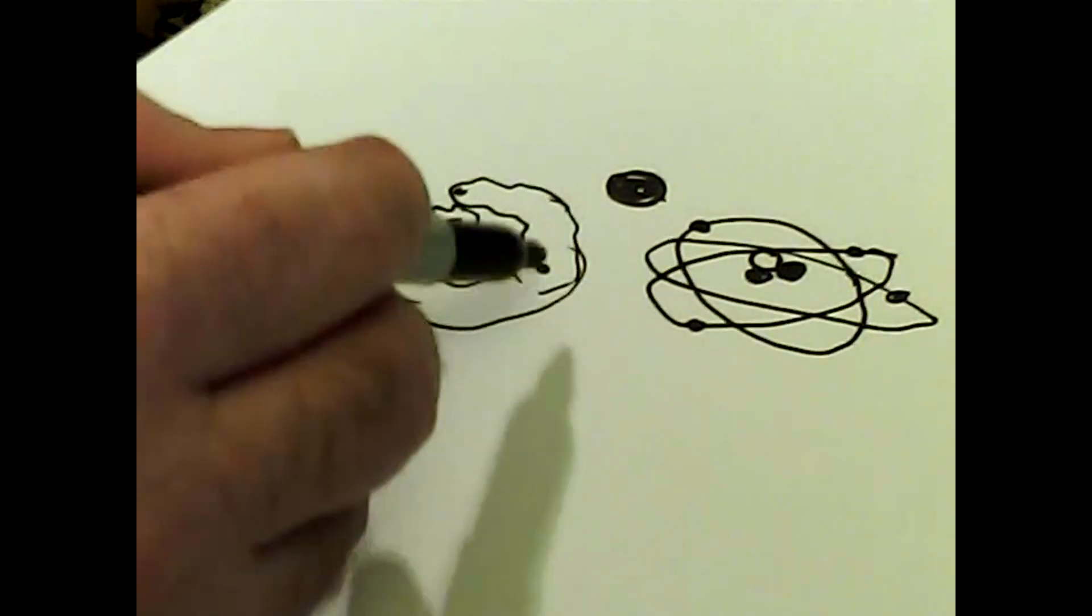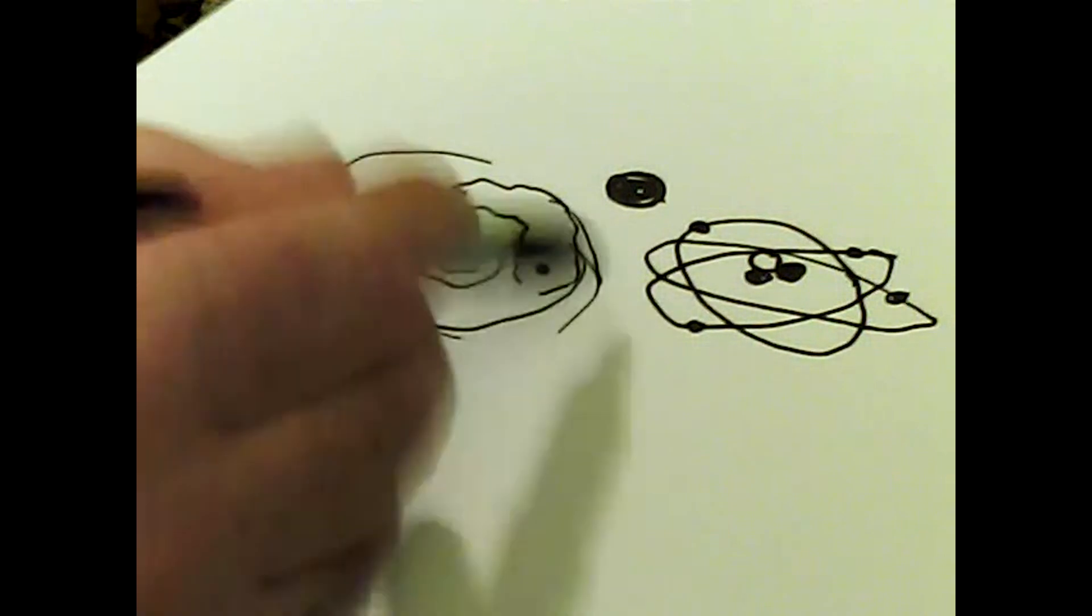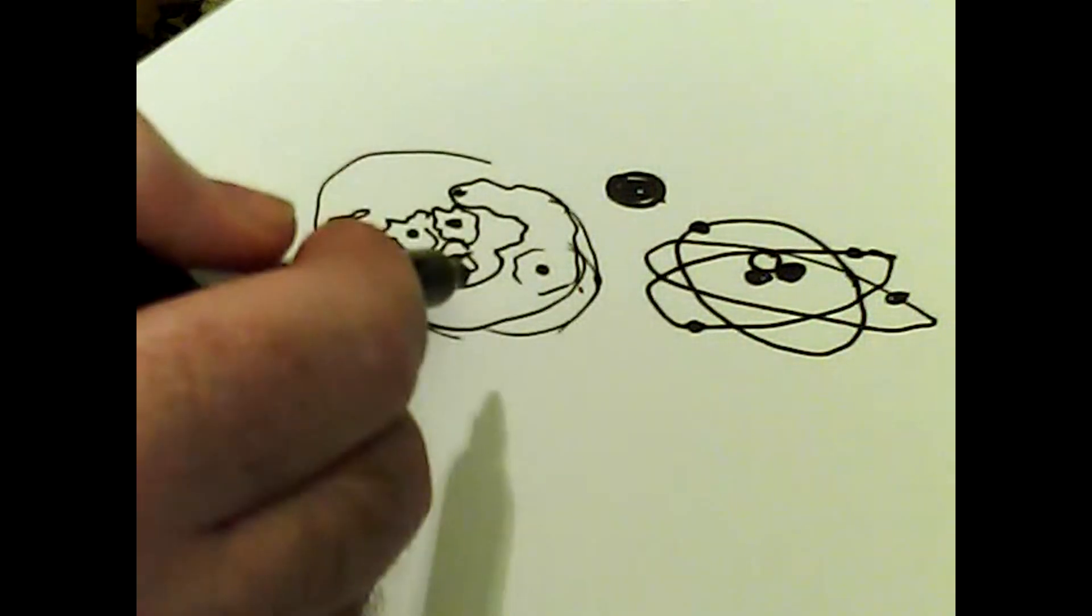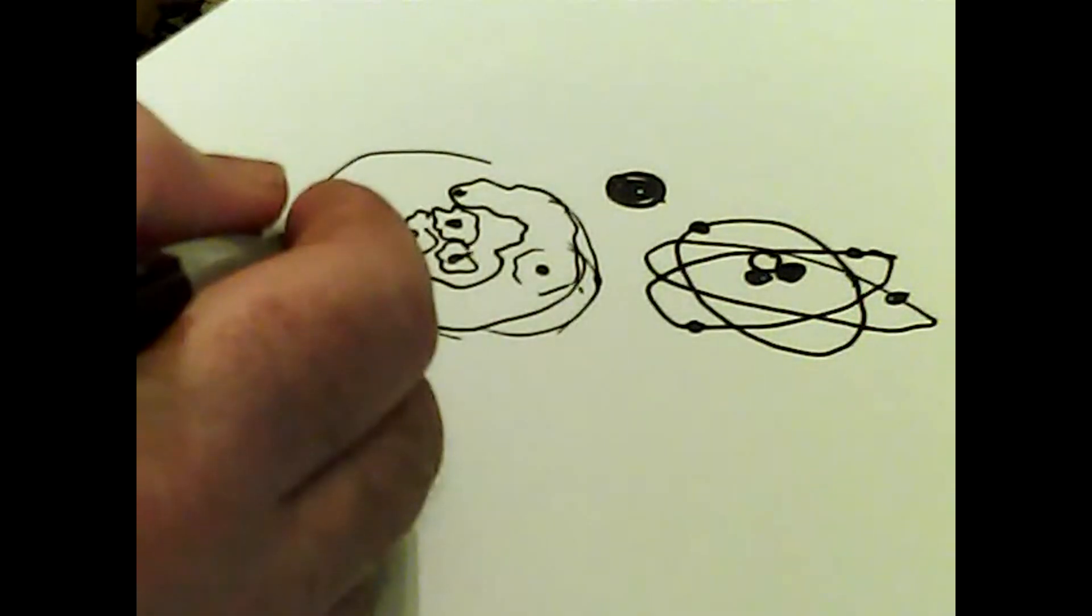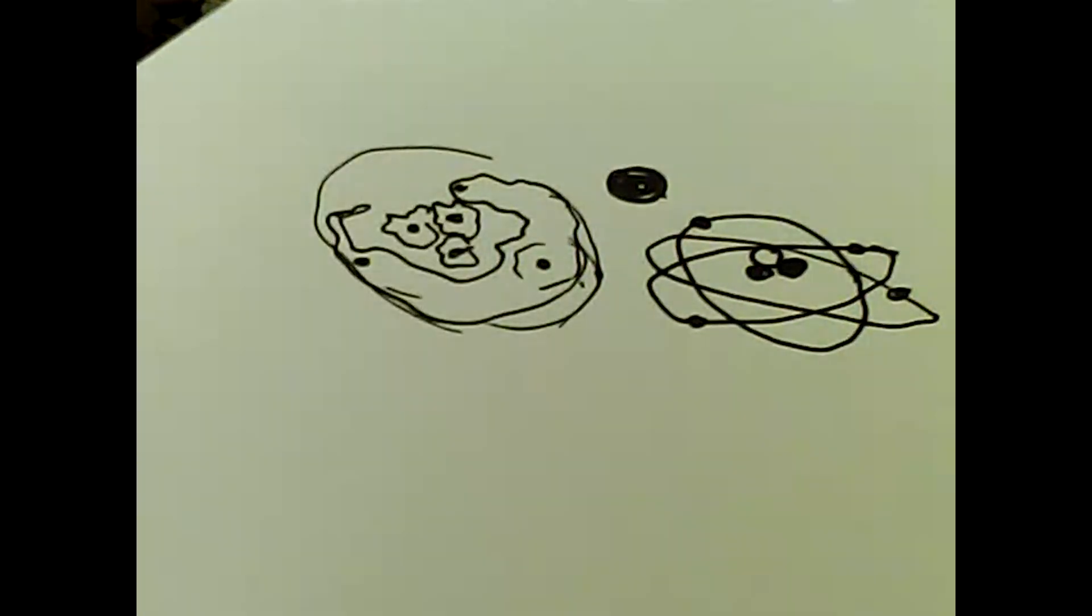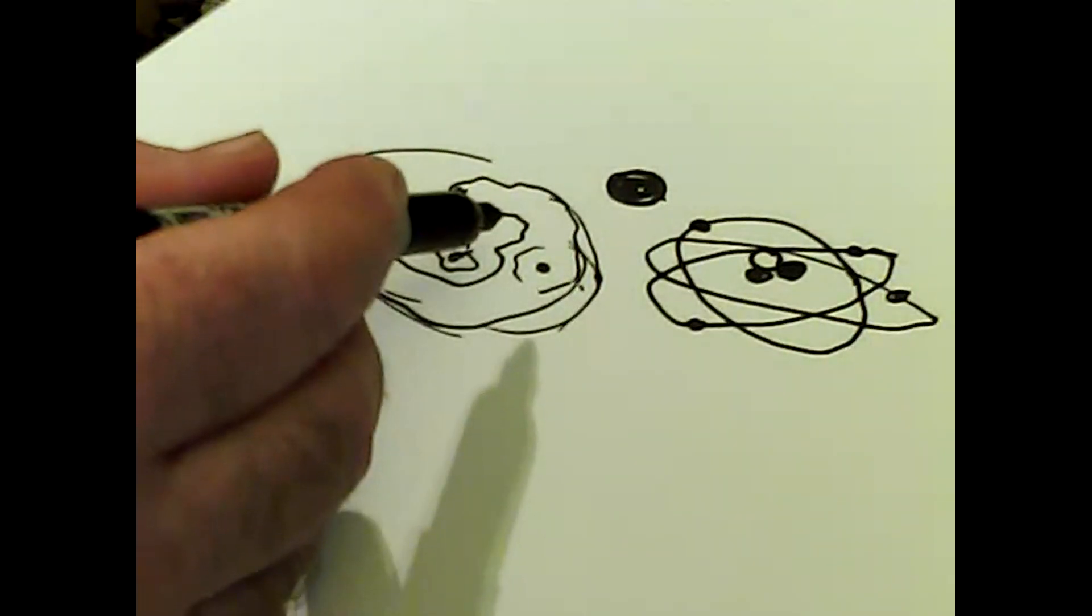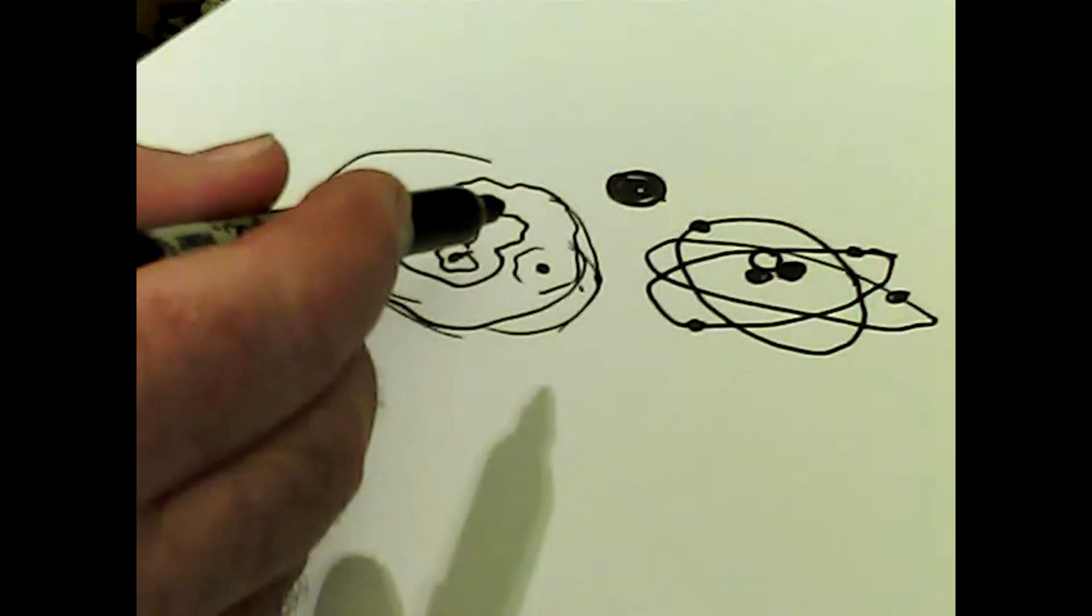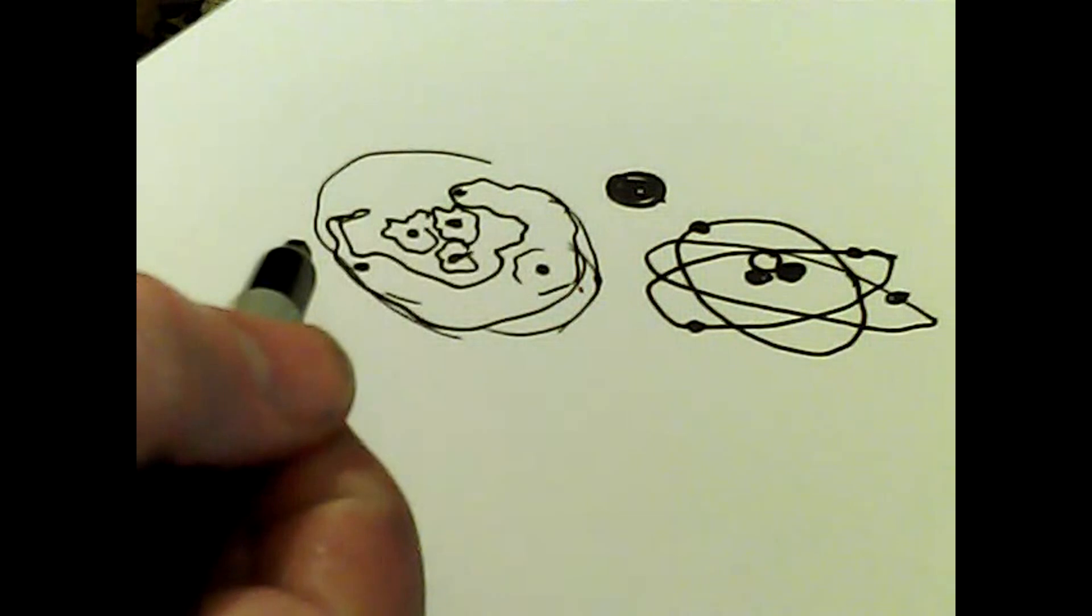So we found that all these subatomic particles work on probability theory, as do photons—for example, hence the two-slit experiment. So the chances are that a subatomic particle is going to be where it's most likely to be, but it could be somewhere else. So given that, let's conduct a little thought experiment. You're probably wondering how this relates to gravity, but please bear with me.